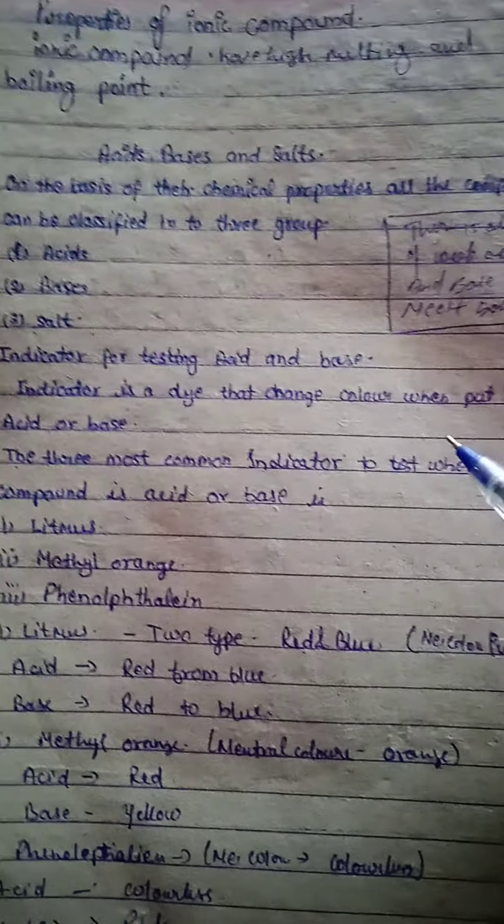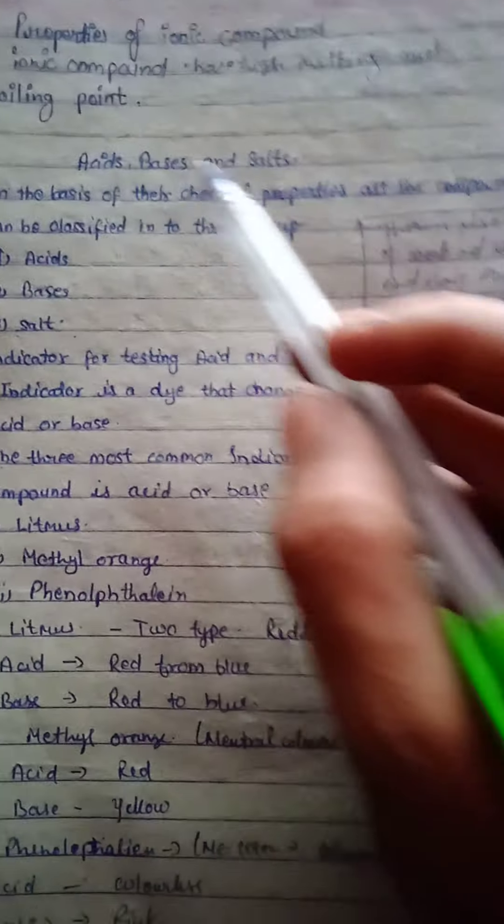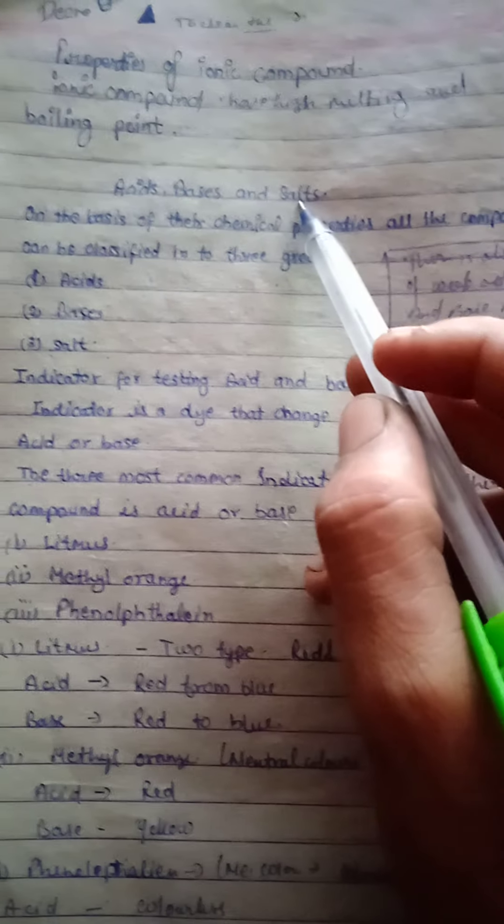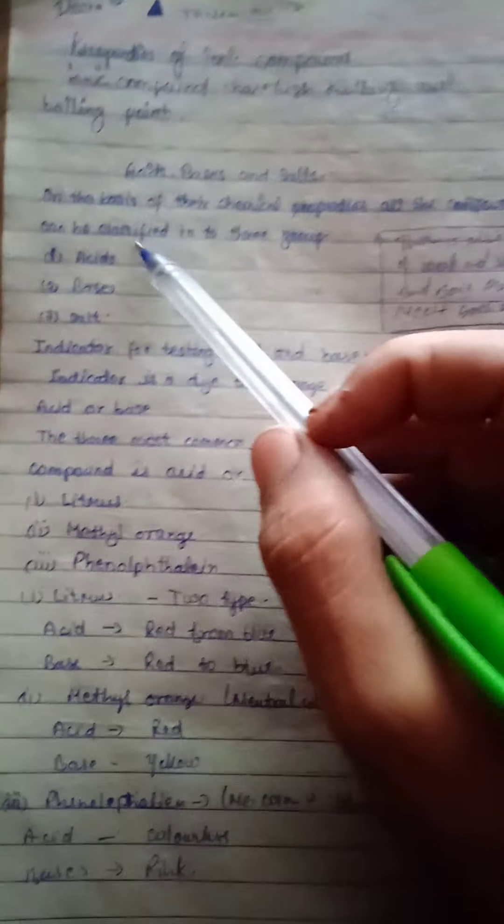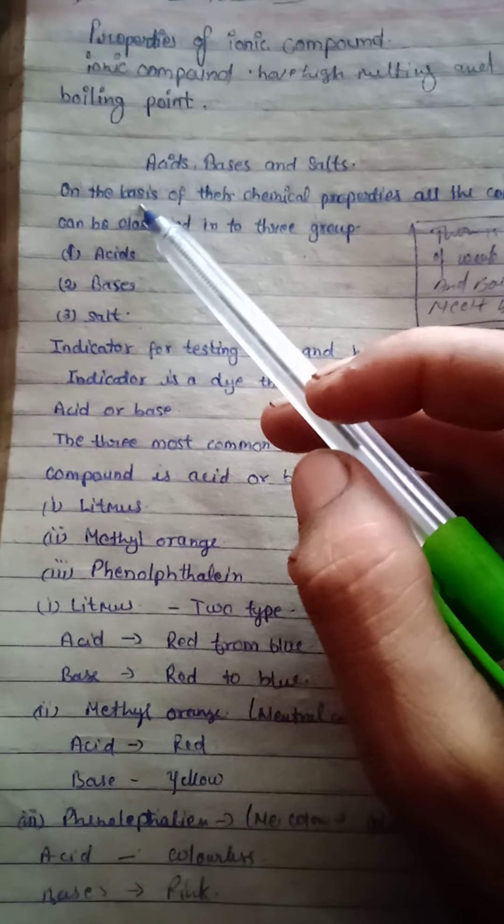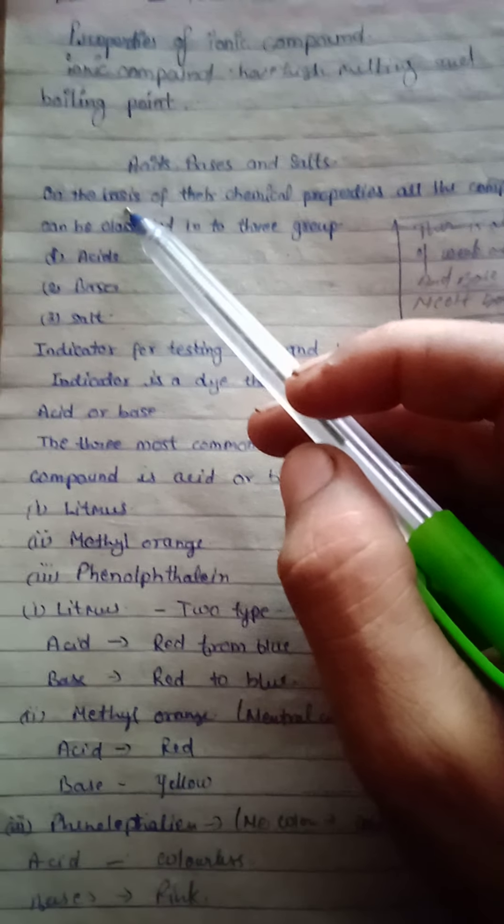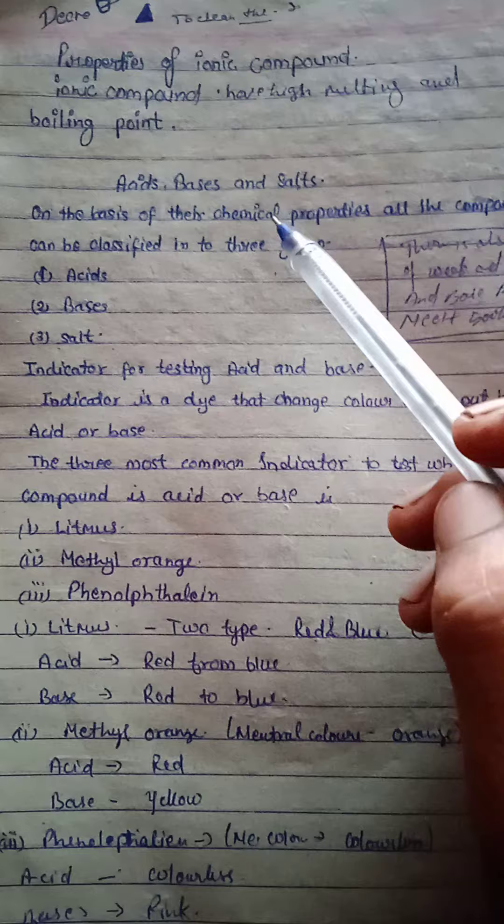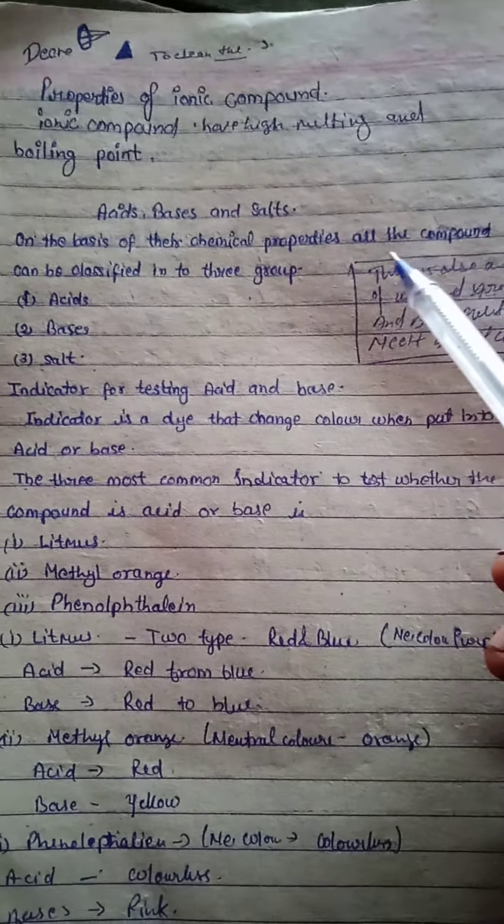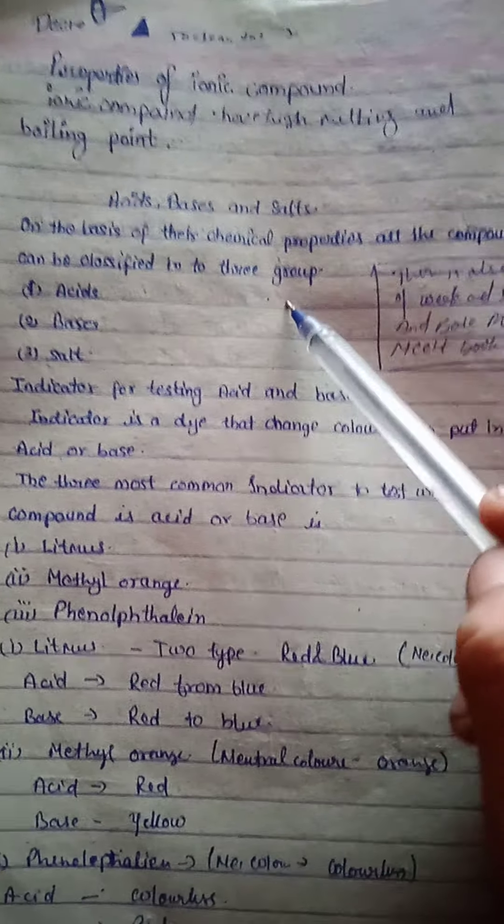Hello everyone, today we are going to study about acids, bases, and salts. So let's start our study. Acids and bases, on the basis of chemical properties, all the compounds can be classified into three groups: acid, base, and salts.